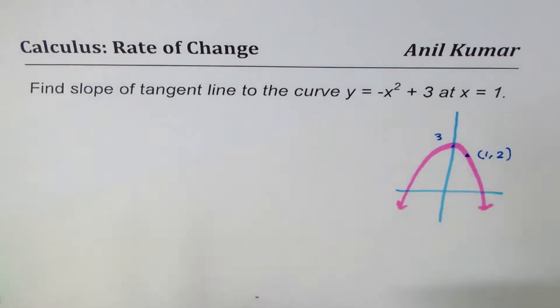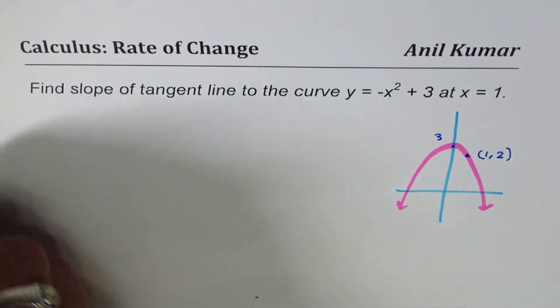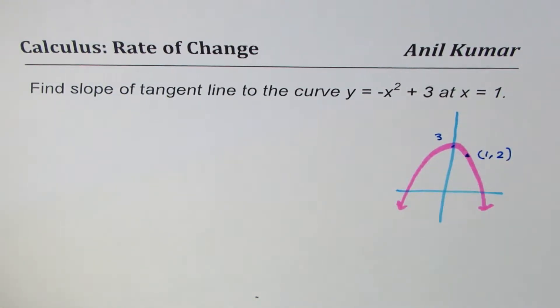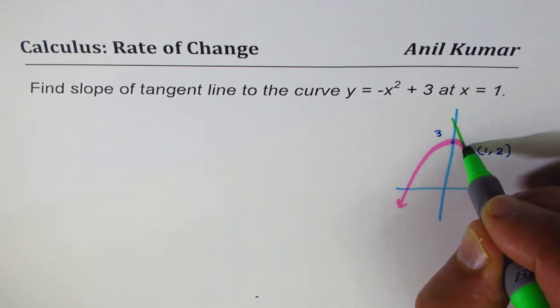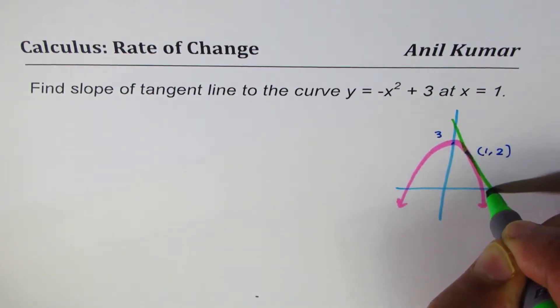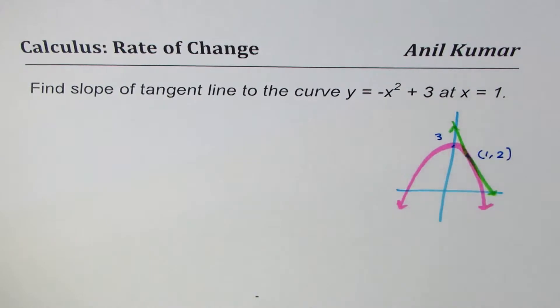When we say find slope of tangent line at a given point, so graphically if you are finding, you will actually draw a tangent here. Kind of like this. And then find slope of this tangent.